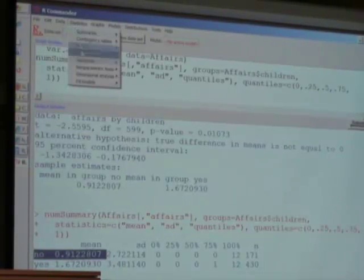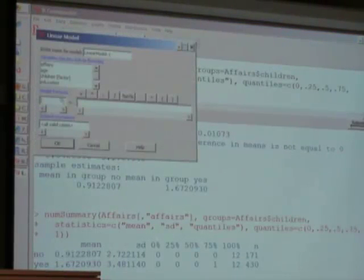Let me run a simple linear regression. I say the number of affairs is a function of children, and see here it says factor because it is a categorical variable. The word factor is R-specific, which is basically saying this is a categorical variable, either or, one zero.